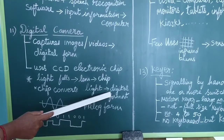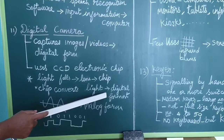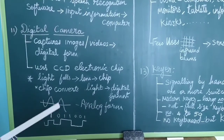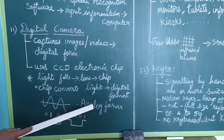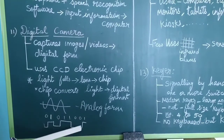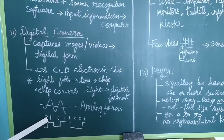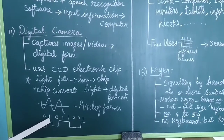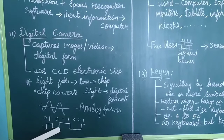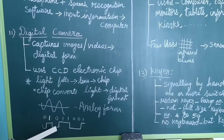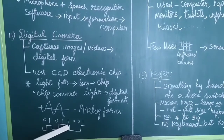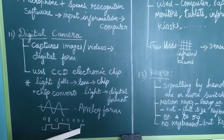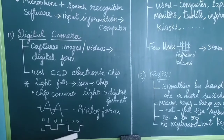The camera captures images in an analog form — that is the physical form. This analog form is then converted into a digital form. In the computer, everything is stored as 0s and 1s. Zero represents a low signal and one represents a high signal, forming the binary digital representation.